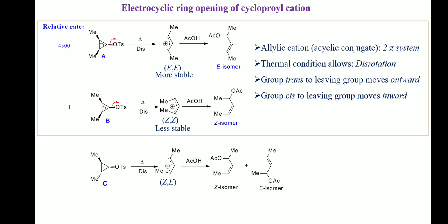Electrocyclic ring-opening of cyclopropyl cation: rearrangement of cyclopropyl cation into allyl cation is an example of the smallest ring system capable of undergoing electrocyclic ring-opening. The open-chain conjugate — the allyl cation — has 2 pi electrons, or 4N+2 pi electrons. So, according to the Woodward-Hoffmann rule, the process will be disrotatory under thermal conditions.